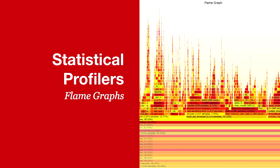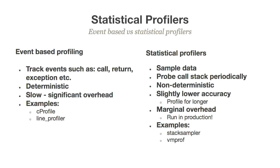To address that, we need statistical profilers and flame graphs. Regular profilers are event-based — they track every single event (calls, returns, exceptions, every line), which is why they're so slow and can't run in production. Statistical profilers sample the data by probing the call stack periodically, almost always based on sending signals to the process. A signal handler wakes up, collects the stack, and records it. They're non-deterministic but have very low overhead.